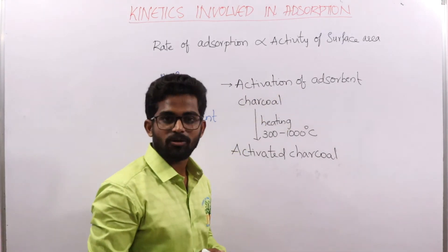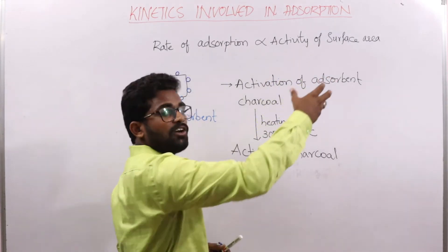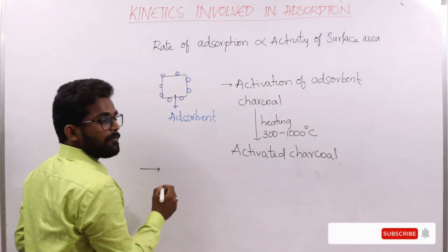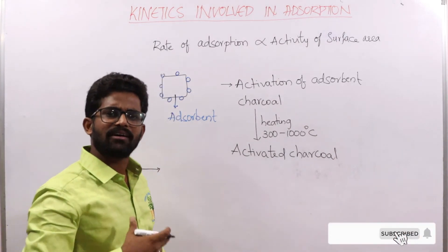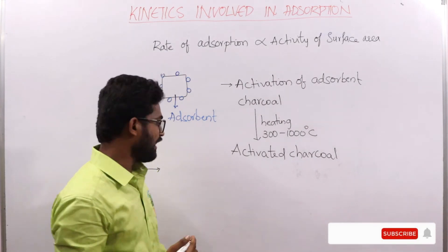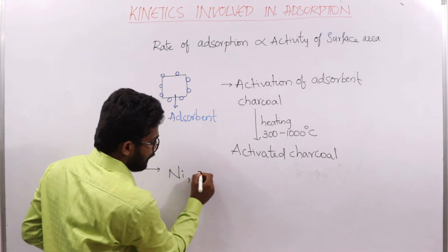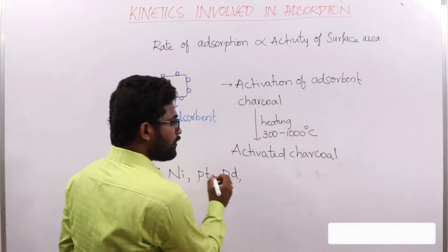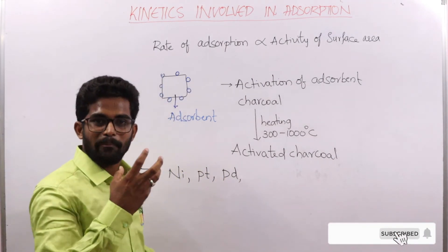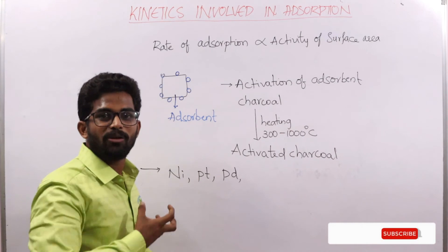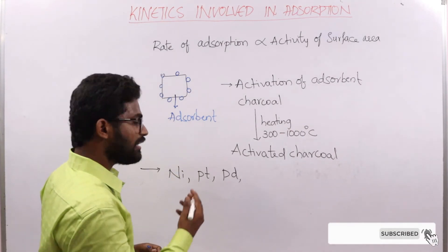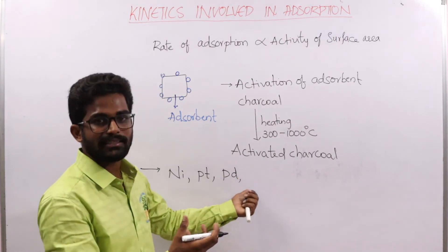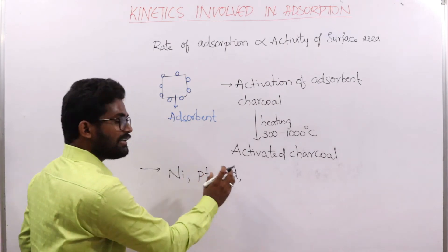Another process in which activation of the adsorbent takes place involves metals used as adsorbents, such as nickel, platinum, and palladium. These metals are mainly used for adsorbing gases — for example, in the hydrogenation of oils, hydrogen gas is adsorbed onto these metal adsorbents.